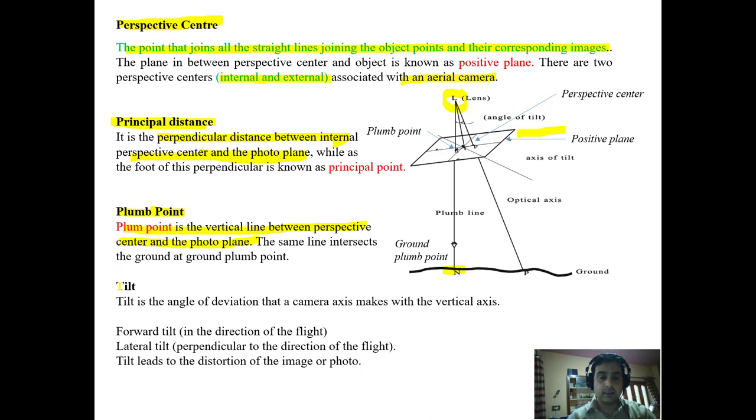And there is another term known as tilt. Tilt is the angle of deviation that a camera axis makes with the vertical axis. So this is the tilt, from here to here. The angle of deviation that a camera axis makes with the vertical axis. Camera axis means the optical axis, and the vertical axis means the plumb line.